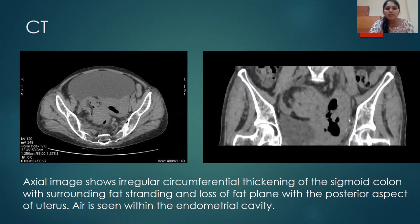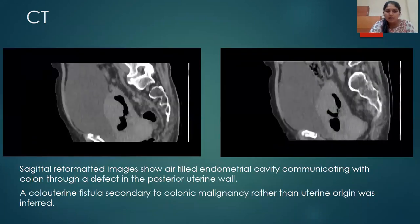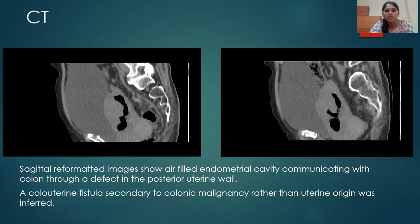We have axial and coronal images which show irregular circumferential thickening of the sigmoid colon, surrounding fat stranding, and loss of fat plane with the posterior aspect of the uterus. We can see air within the endometrial cavity. In the sagittal reformatted images we can see that the air in the endometrial cavity is actually communicating with the lumen of the bowel, specifically at the rectosigmoid junction.